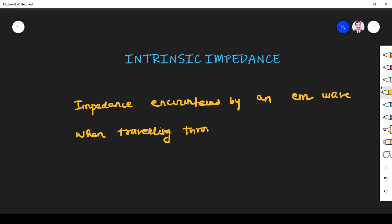It is the impedance faced by an electromagnetic wave when traveling through a medium. That's why it's called intrinsic impedance. It is also known as wave impedance, and the symbol for intrinsic impedance is eta.